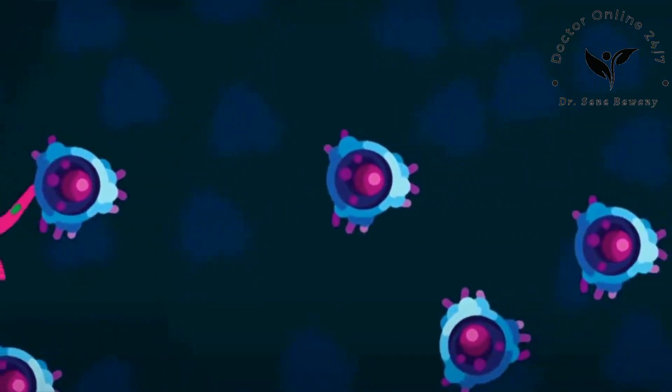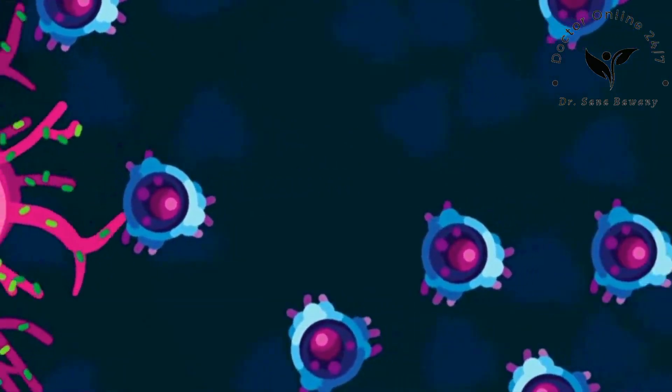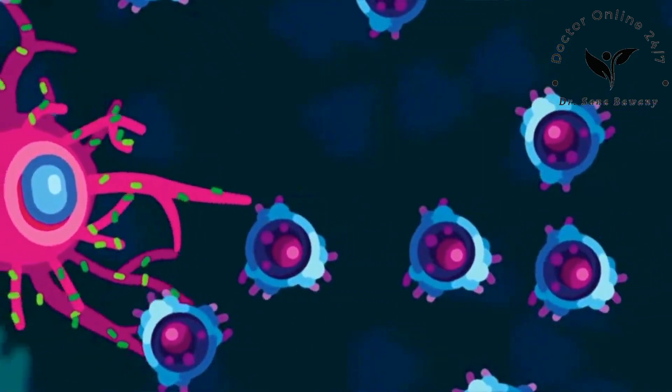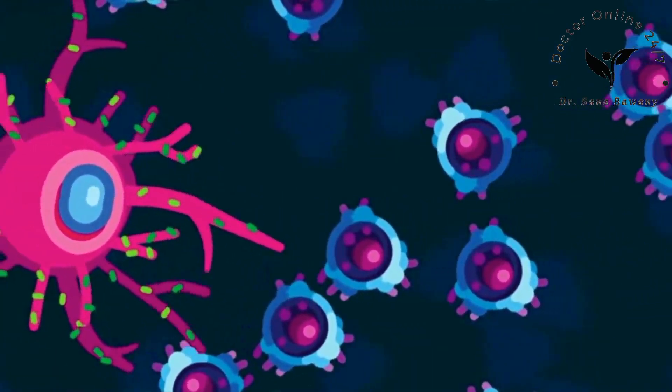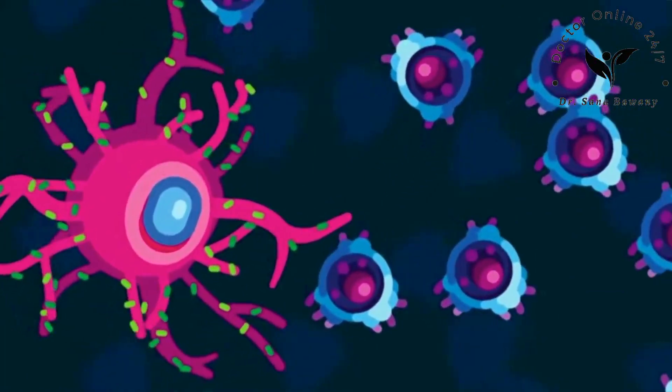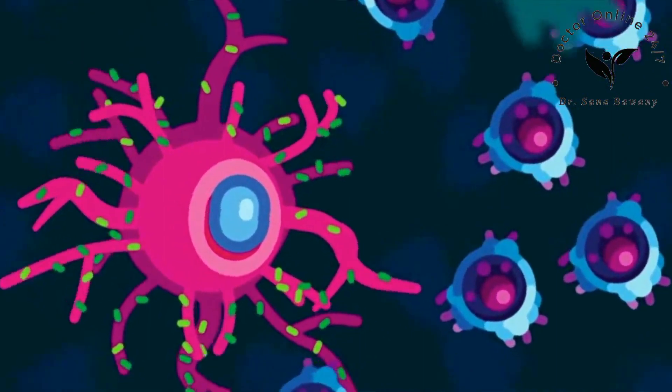Most T cells are a bit disgusted and not interested. But after a few hours, something clicks. A helper T cell recognizes the bacteria parts. This cell is the weapon that's needed right now. The dendritic cell is overjoyed and activates the helper T cell.